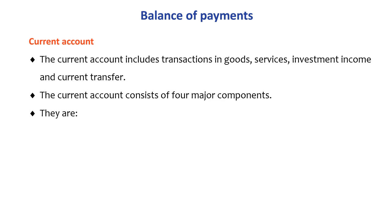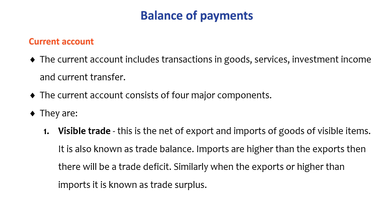The first component is visible trade — this is the net of exports and imports of goods, i.e., visible items. It is also known as the trade balance. If imports are higher than exports, there is a trade deficit. When exports are higher than imports, it is known as a trade surplus.